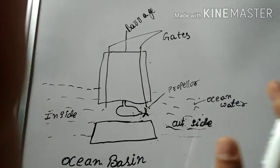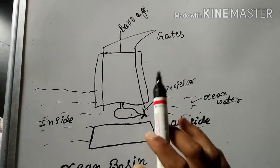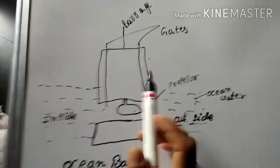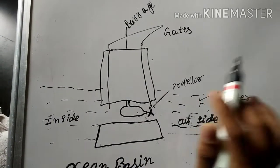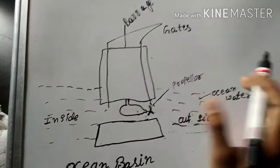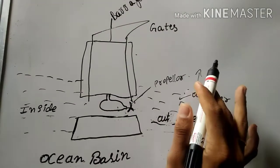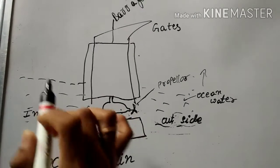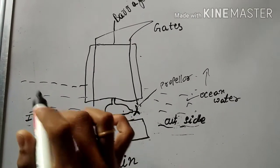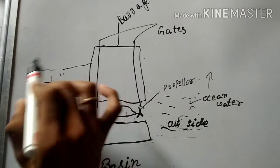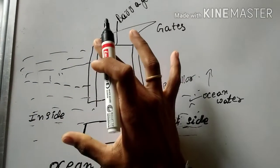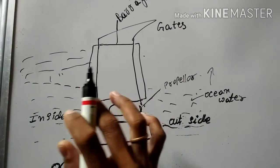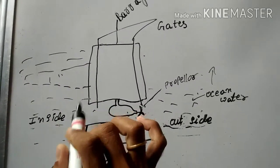Now let us discuss the working. The basic purpose of building a barrage is to store water. Whenever the high tide is caused, the water from outside the barrage is filled inside the barrage and stored. Whenever the water inside the barrage increases, the height of the water increases, and whenever the height increases, the pressure inside the barrage also increases.